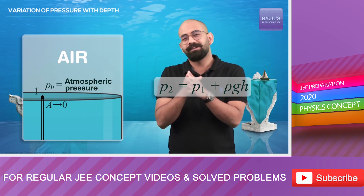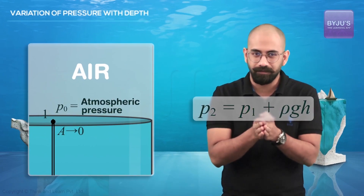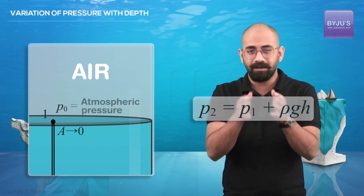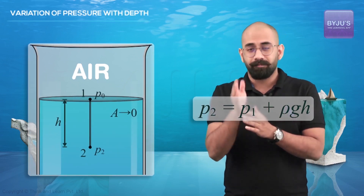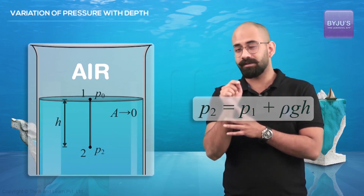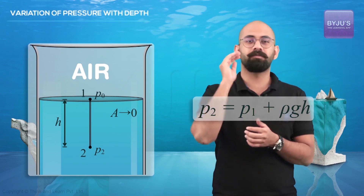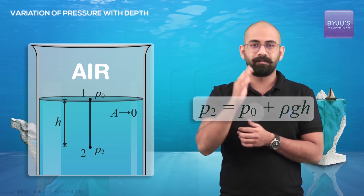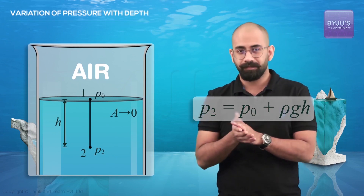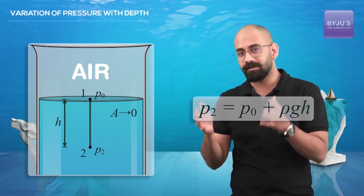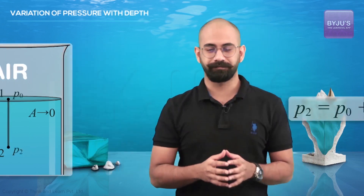So by the same logic, the pressure at this point would be the pressure due to the weight of the air above it — let's call this atmospheric pressure, or P0. We'll talk about this in great detail in a while. But right now, we find that the pressure at that point P2 is equal to P0 plus ρGH, where H is the depth of the point from the surface. So we now know how to find the pressure at a point in a fluid, and that it depends only on the depth from the surface.